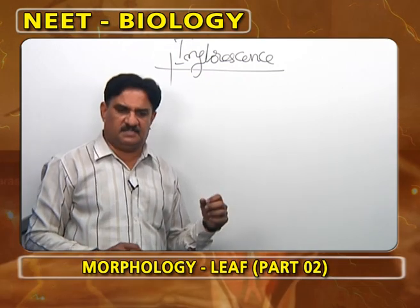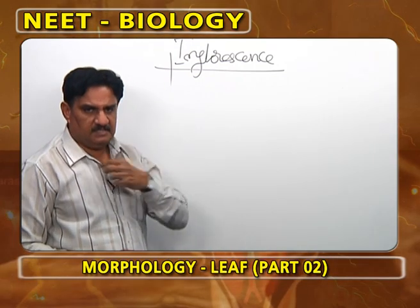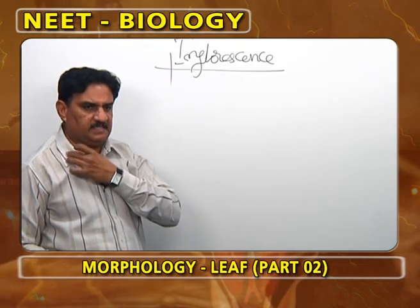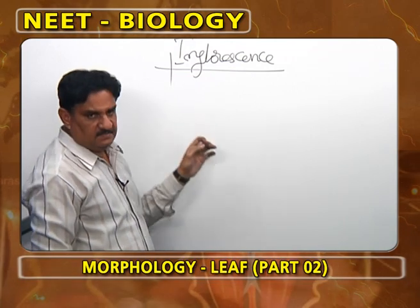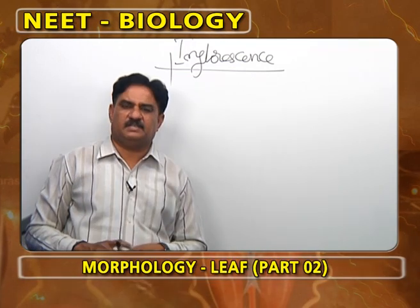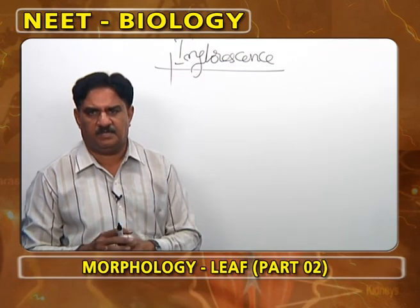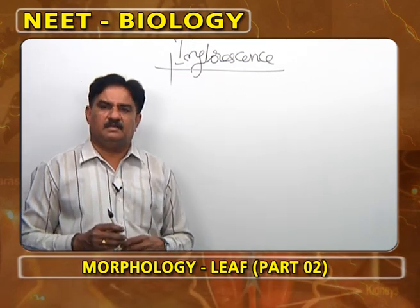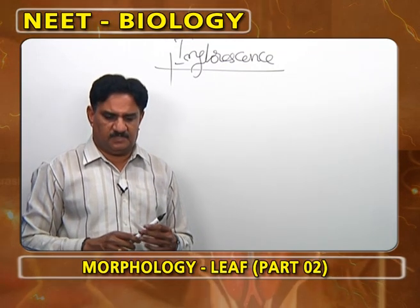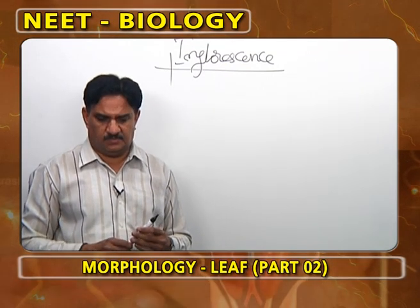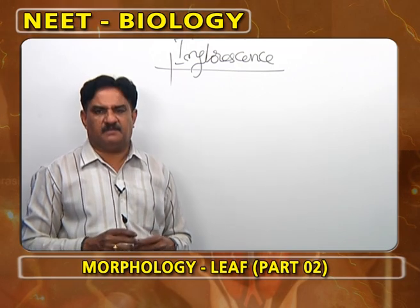After the leaf in your syllabus, the first chapter is root, the second chapter is stem, the third chapter is leaf, and now till here we have completed vegetative morphology. Vegetative morphology means root, stem, leaf.